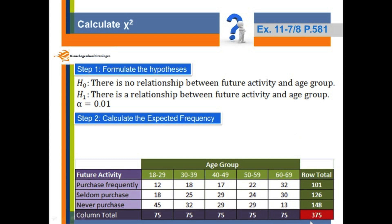Now let's look at this number, 375, shown in red. We call this the total of the total. That means in our research we have in total 375 persons. In order to get the expected frequency, we need to use the row total times the column total, and divide it by the total of the total. So for the first cell, 12, we need to do it as 101 times 75 divided by 375, then we get 20.2.